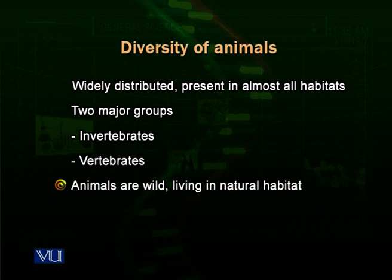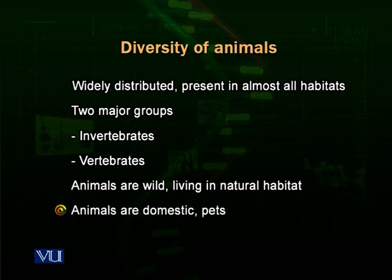Animals are wild if they are living in their natural habitat — we call them wild animals. Animals are domesticated, that is, if we keep them in our homes or in our farmhouses. For example, we keep pets like dogs. Some people culture animals for personal or commercial purposes for getting eggs, milk, or other products — for example, people keep hens and cocks.